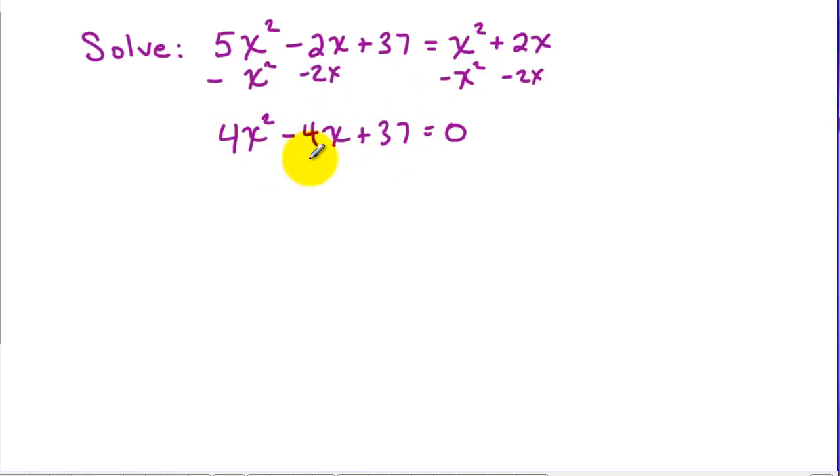Now we could use the quadratic formula, I mean we could use completing the square here, but when I divide by 4 we're going to have a fraction here. Now that will work. So let's use the quadratic formula on this. So for this, a is 4, b is negative 4, and c is 37.